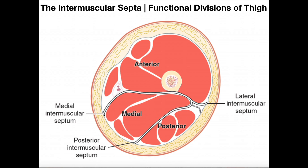Now if you look at the borders of the thigh, we actually have three septa — septum is singular, septa is plural. This one over here is called the medial intermuscular septum. Down here we have the posterior intermuscular septum, and then over here laterally we have the lateral intermuscular septum. Notice that each septum is connected by this extension of the deep fascia, so it's this fascia that's actually dividing up these muscles into compartments. One thing you should know about deep fascia is that it compartmentalizes different muscle groups — muscle groups that tend to have one common action or function.